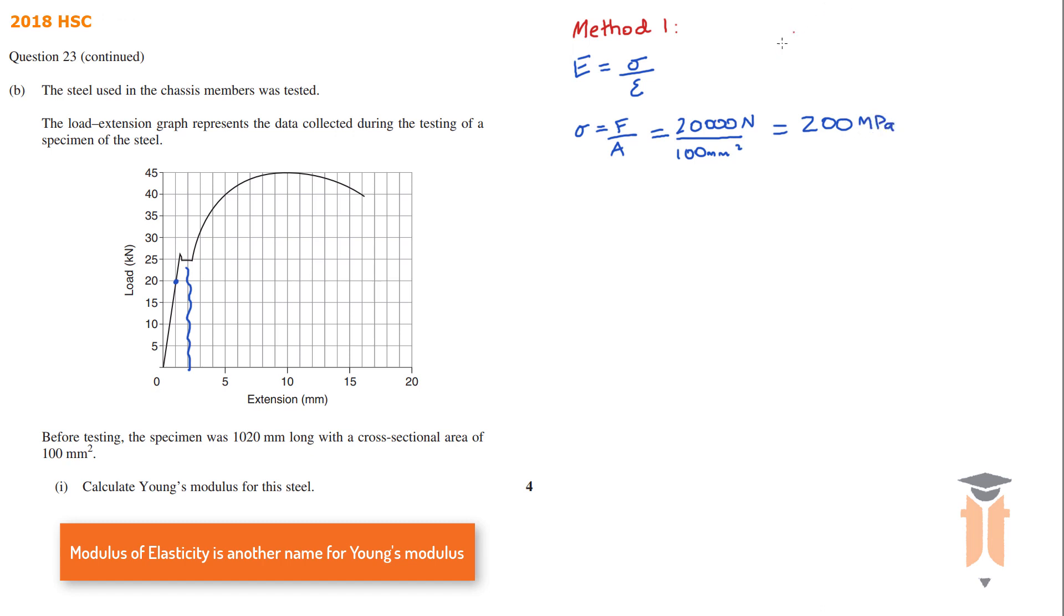Which brings me to my next point. If we have newtons per millimeter squared we get our answer in megapascals. And if we have our answer in newtons per meters squared we get our answer in pascals.